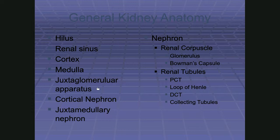Renin helps control blood pressure, and erythropoietin helps create new red blood cells — we covered that back in chapter 17.